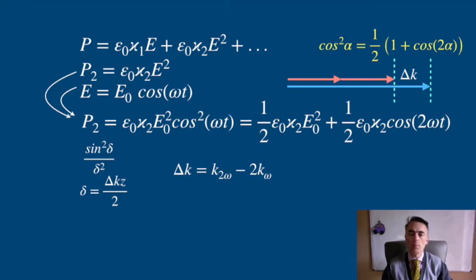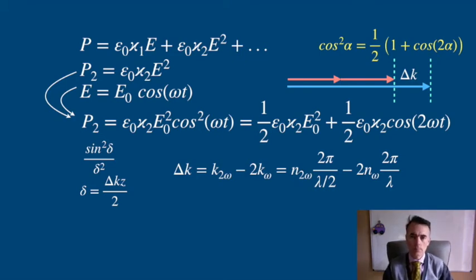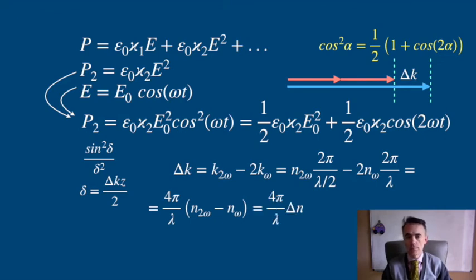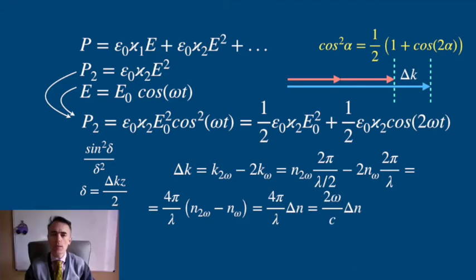Because the wave number K in the medium is N 2π over lambda, inside the medium, the index N can be different for the second harmonic and for the fundamental. Δk is 2ω over c times delta of n.